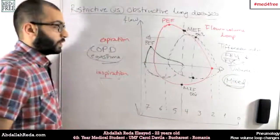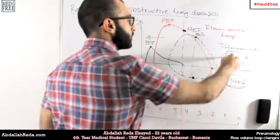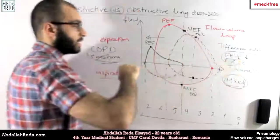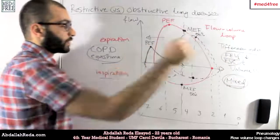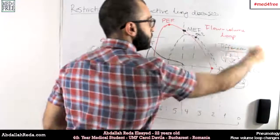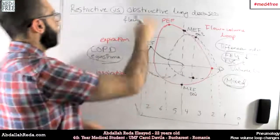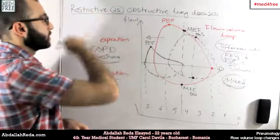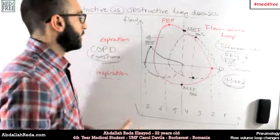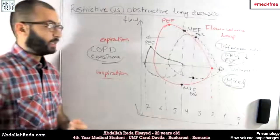In mixed syndromes we would have a decrease in everything: a decrease in FEV1, a decrease in FVC (vital capacity), a decrease in residual volume, and a decrease in the Tiffeneau index — because of the combination of both obstructive and restrictive lung diseases. This would be the case in very severe COPD, for example.